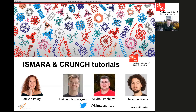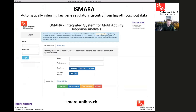The topic of today is iSMARA web server. iSMARA is a tool for automatically inferring gene regulatory circuitry from high throughput data that you can upload to the website. The website address is ismara.unibas.ch.